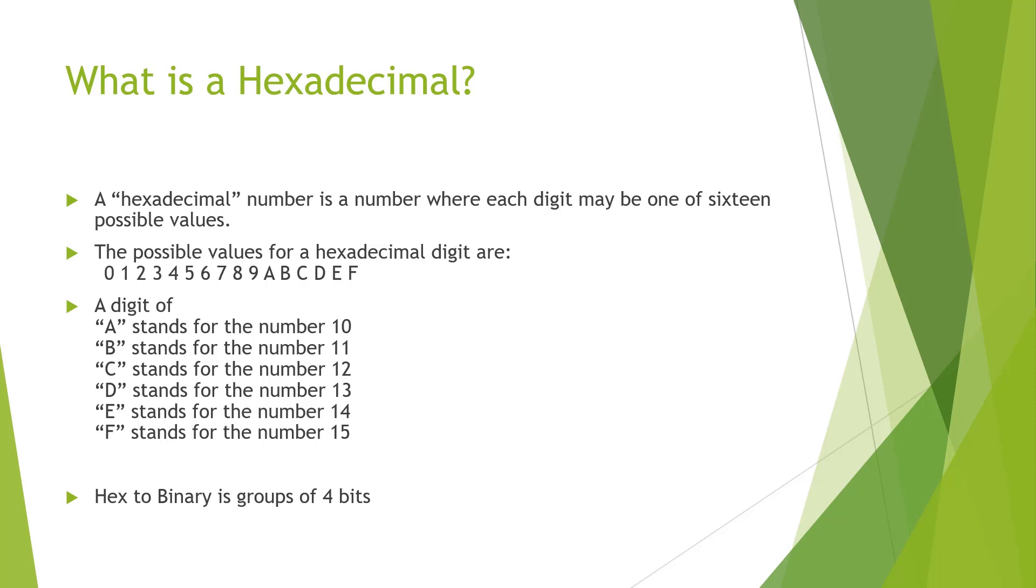What is A? A is really just a clever way to say 10, but represent it in a single digit form. Because again, hexadecimal we are looking at single digits. B is for 11, C is for 12, D is for 13, E is for 14, F is for 15.